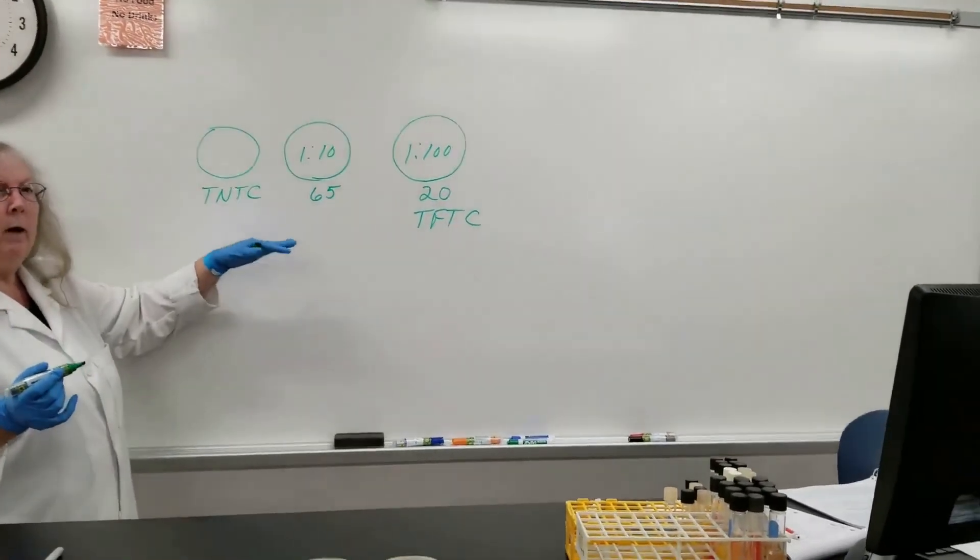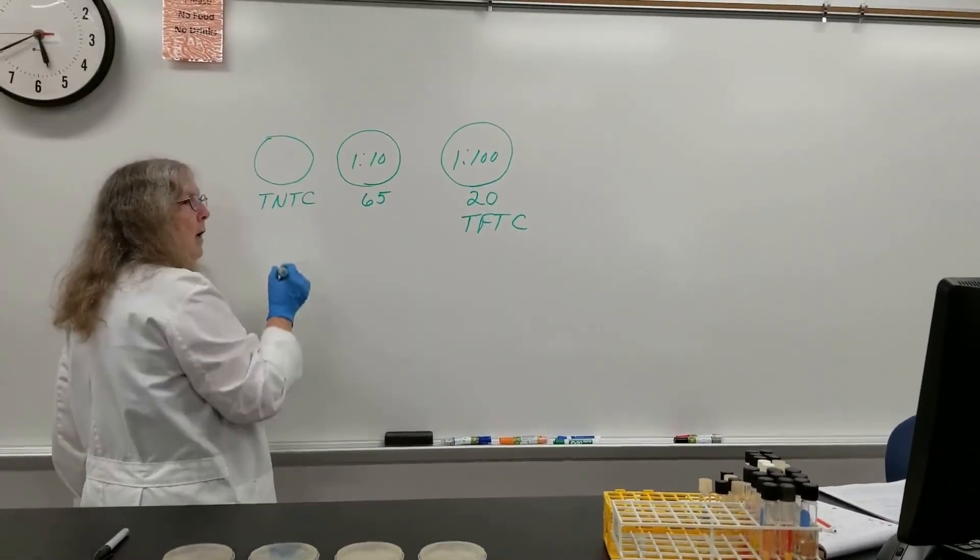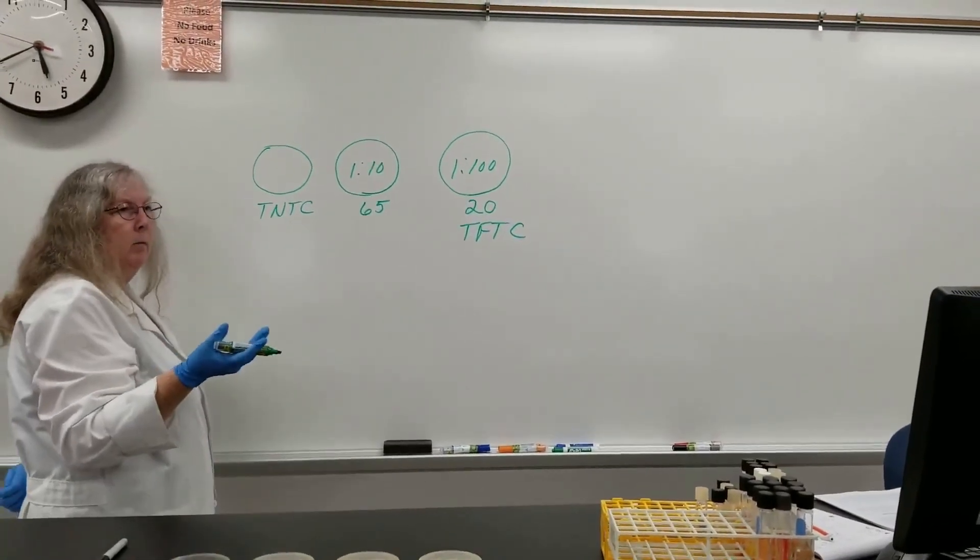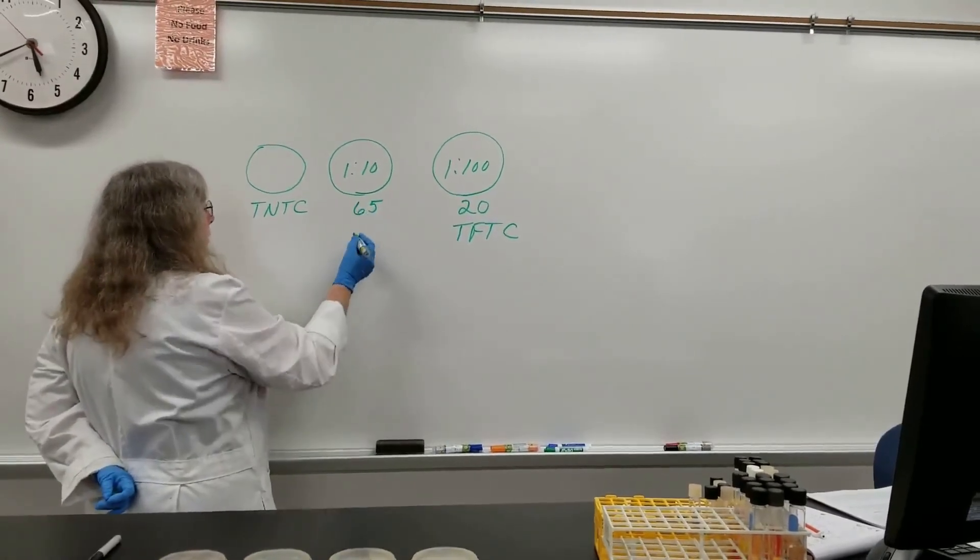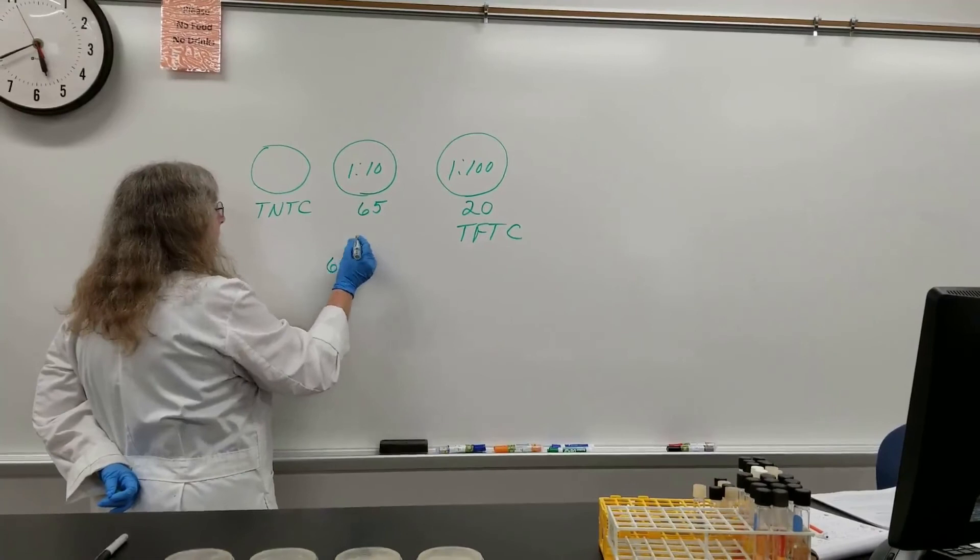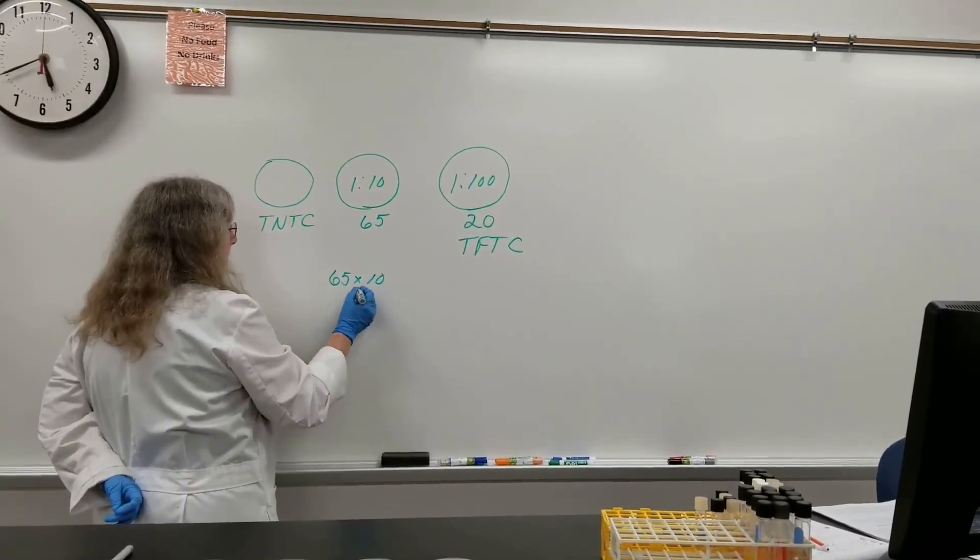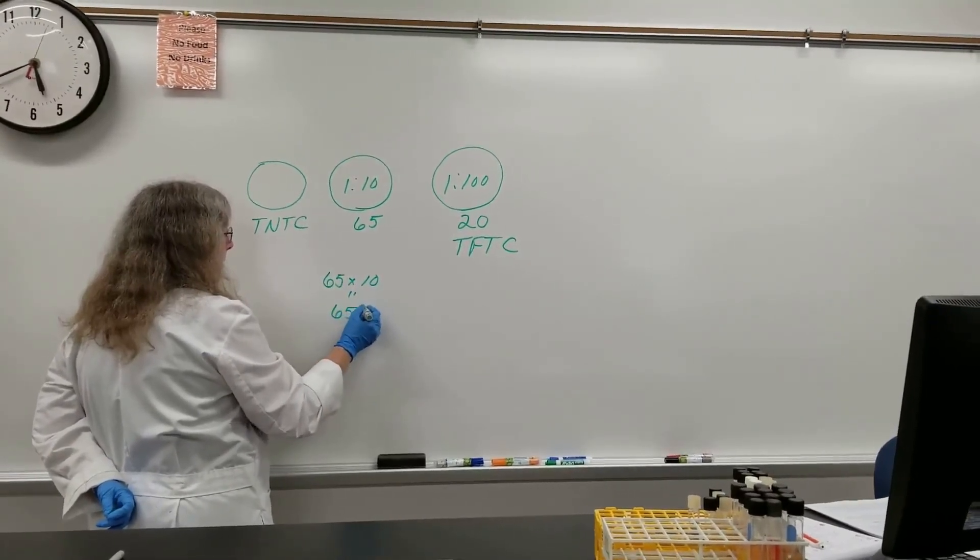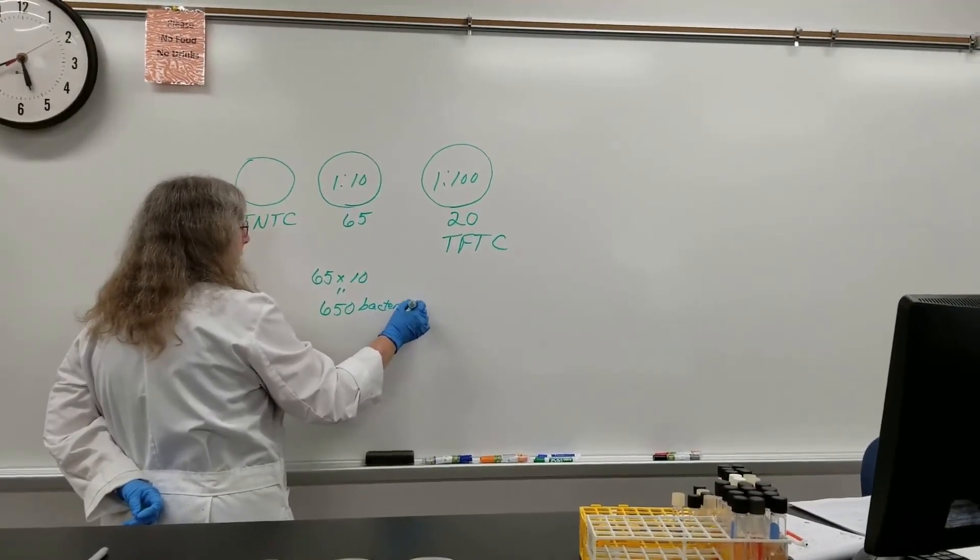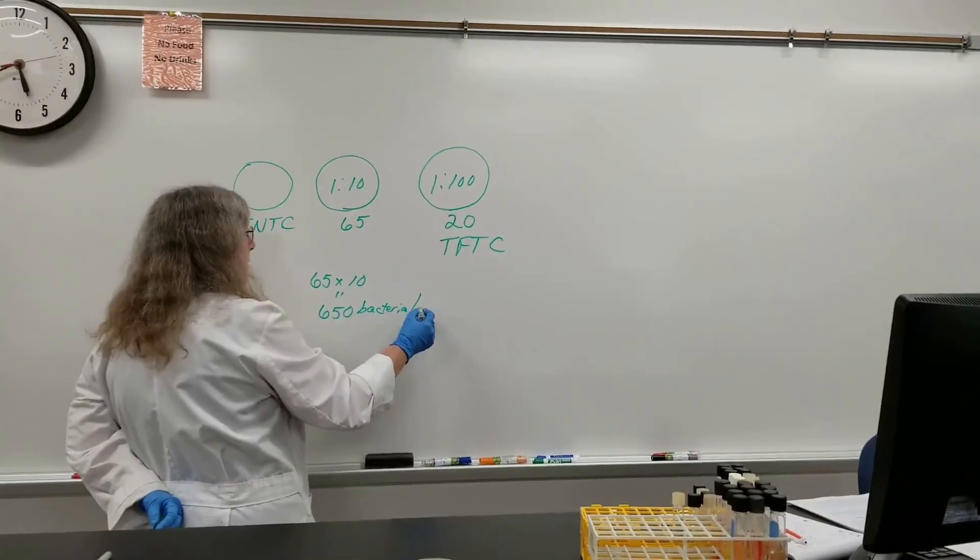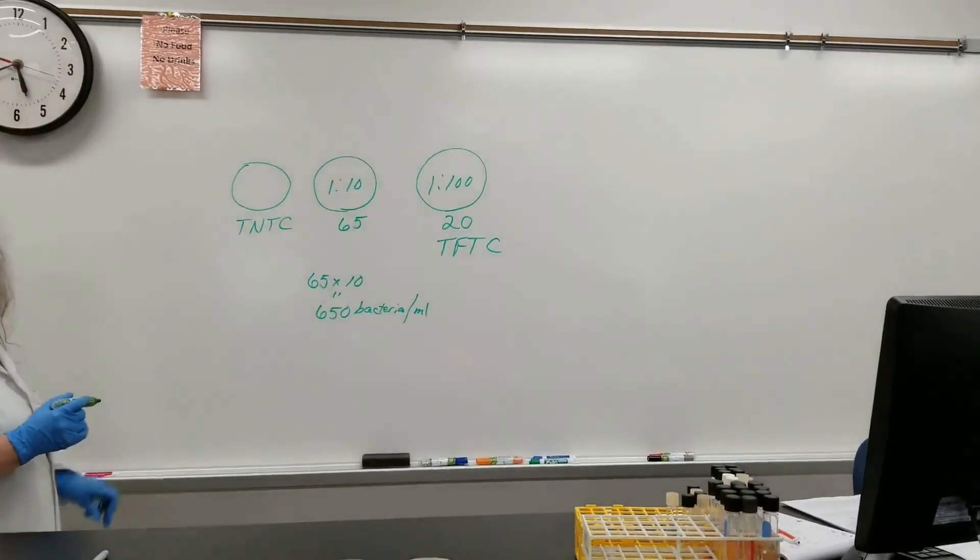Well the ultimate thing was to figure out how much did you have per milliliter. Trace back to that original item that you had, in this case it was a strawberry slushie. So what you do is you take that 65, multiply it by your dilution factor which is 10, and so that means you have 650 bacteria - that's what was growing on our plate - per, now we were using a slushie, so it's per milliliter of what that initial substance was.